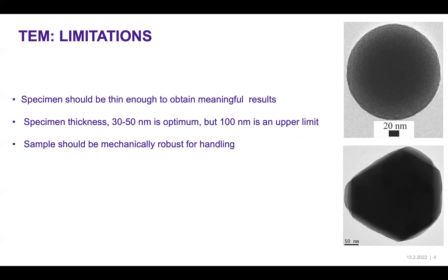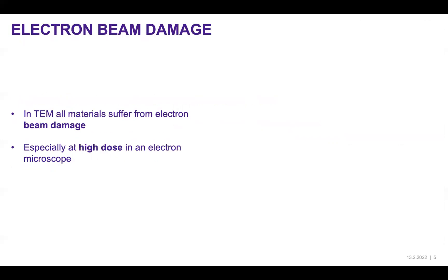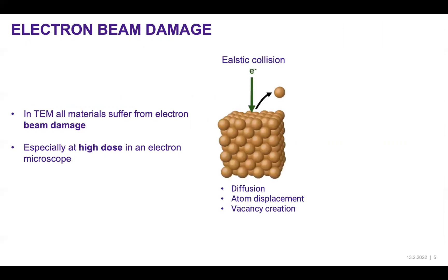Samples should be mechanically robust for handling because of the high vacuum and experimental conditions. They have to be tolerant to high electron energy and high energy electron beams, and samples undergo electron beam damage. Almost all materials suffer from this, especially when using high dose in an electron microscope. This is due to elastic collision that leads to diffusion, atom displacement, or vacancy creation.